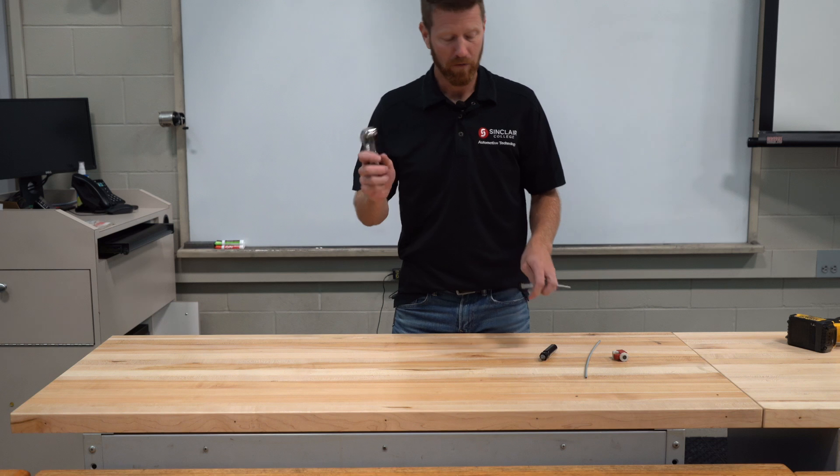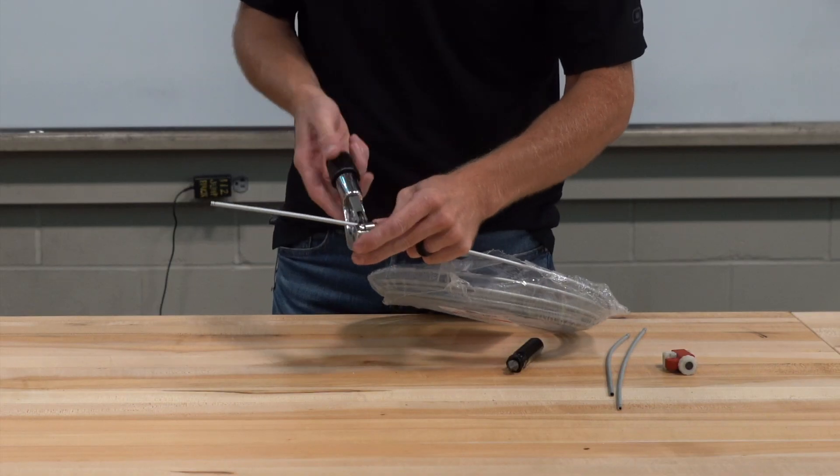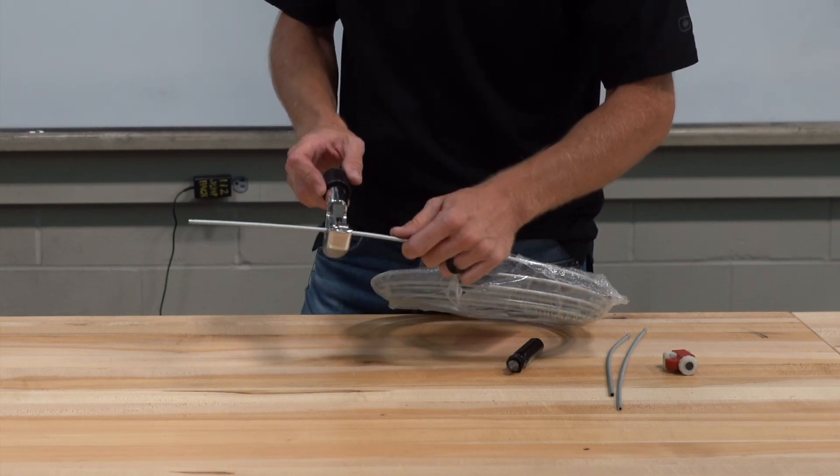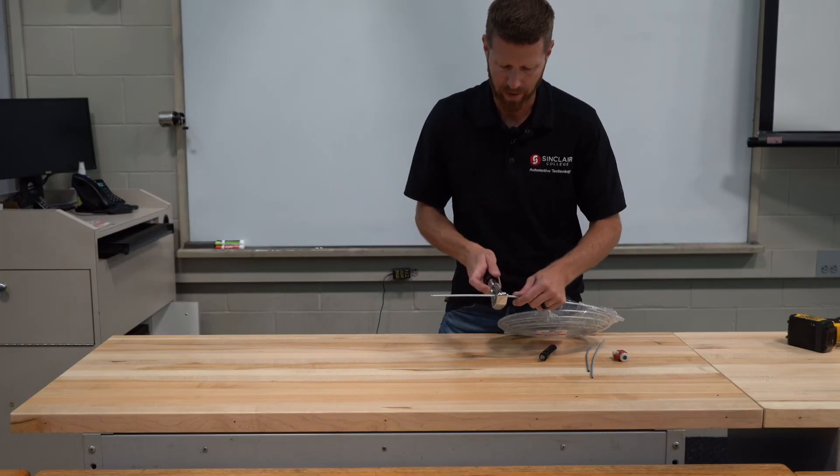All right, so first thing we're going to do is we're going to take a regular ordinary tubing cutter. I'm going to slide this over the line, tighten this down ever so slightly, and then every time it comes around I'm just going to tighten it just a little bit.